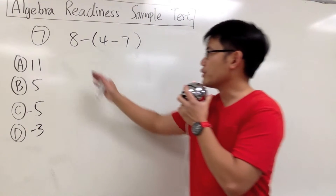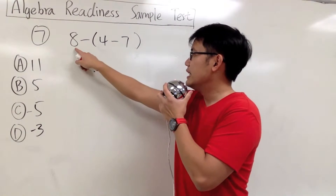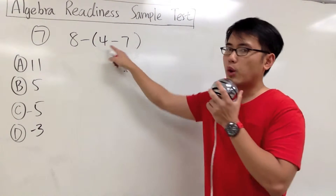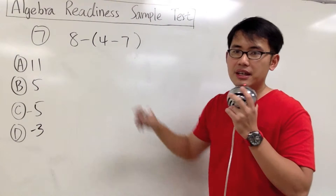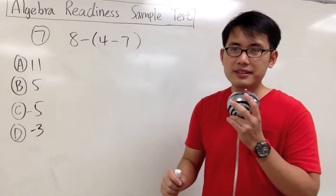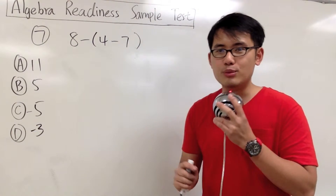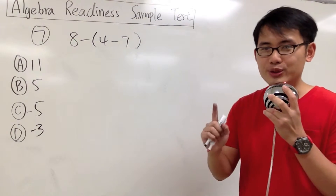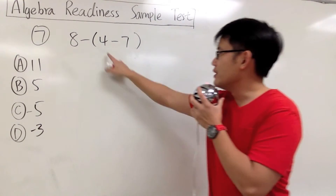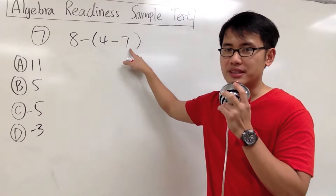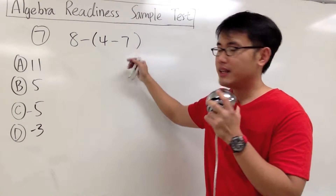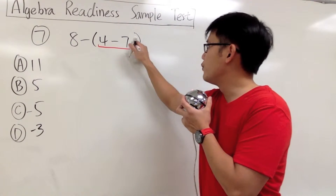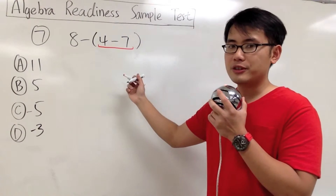Number 7, we are going to work this out: 8 minus parentheses, 4 minus 7. The key right here is that we have to remember our order of operations, which says we are going to work out the inside of our parentheses first. So we will focus on 4 minus 7 first.